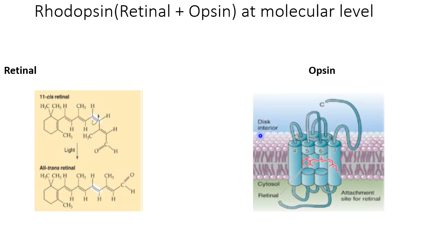Opsin is a complicated structure present in the disc membrane; it is actually a G protein-coupled receptor with seven transmembrane domains. You can see here there are seven transmembrane domains with the carboxy terminal and amino terminal on the inside and outside respectively. The retinal sits inside this pocket within opsin.